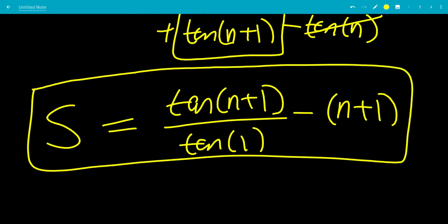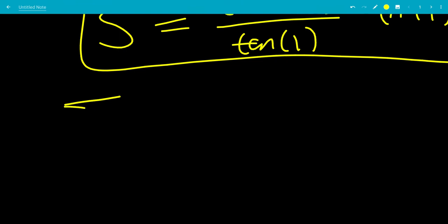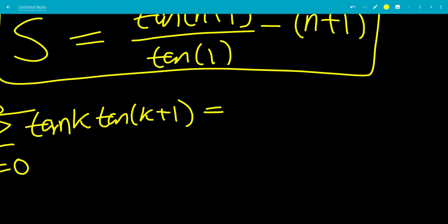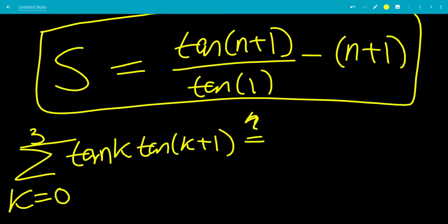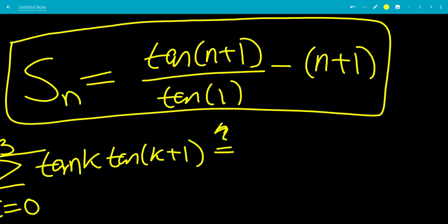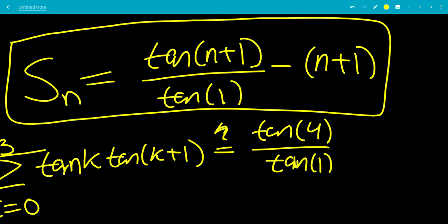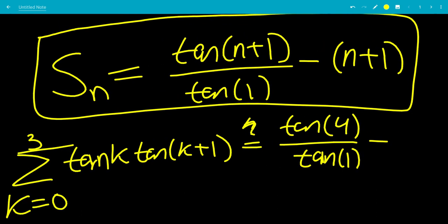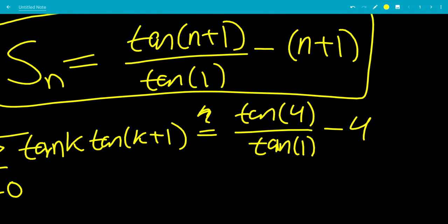Let's do an example: the sum from k equals 0 to 3 of tangent k times tangent k plus 1. With n equals 3, we plug into our formula: tangent of 3 plus 1, which is tangent 4, all over tangent 1, minus 3 plus 1, which is 4. That's the end of the video — hope you liked it and thanks for watching.